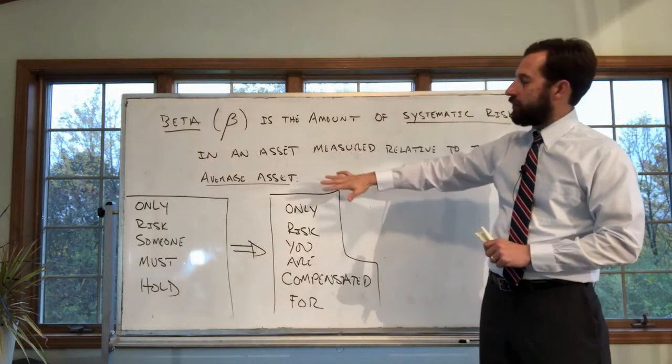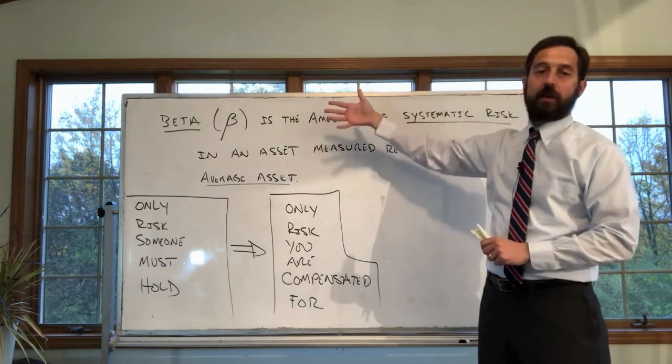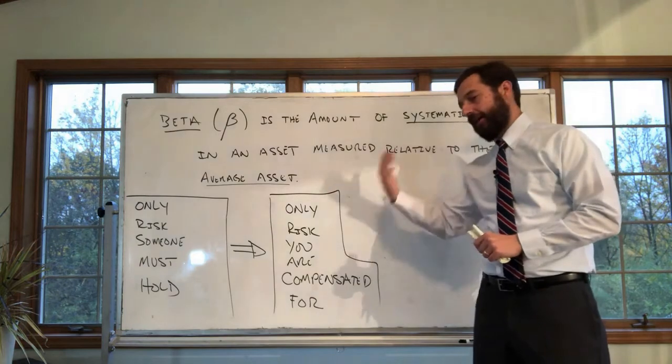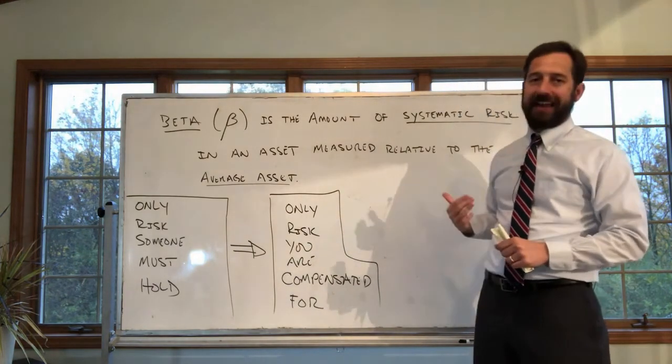Measured relative to the average asset. The average asset is the market. If Tesla has a beta of two, it has twice the amount of systematic risk as the market. If a stock, Exxon, has a beta of 0.5, it has half.